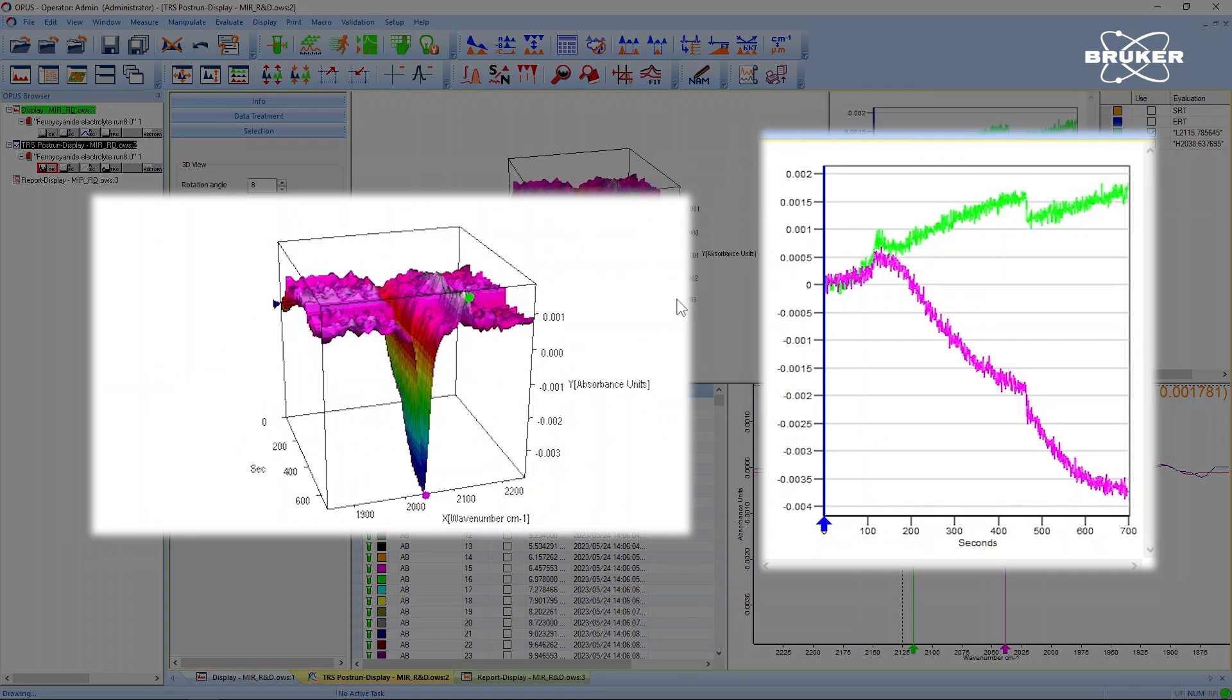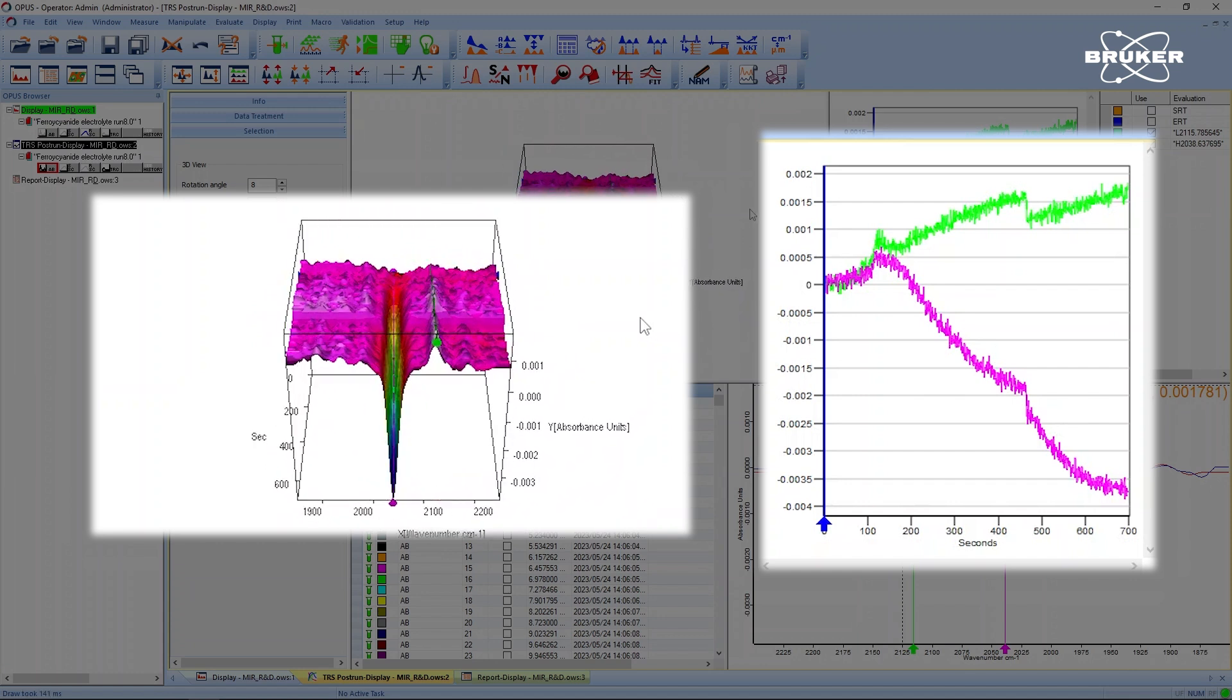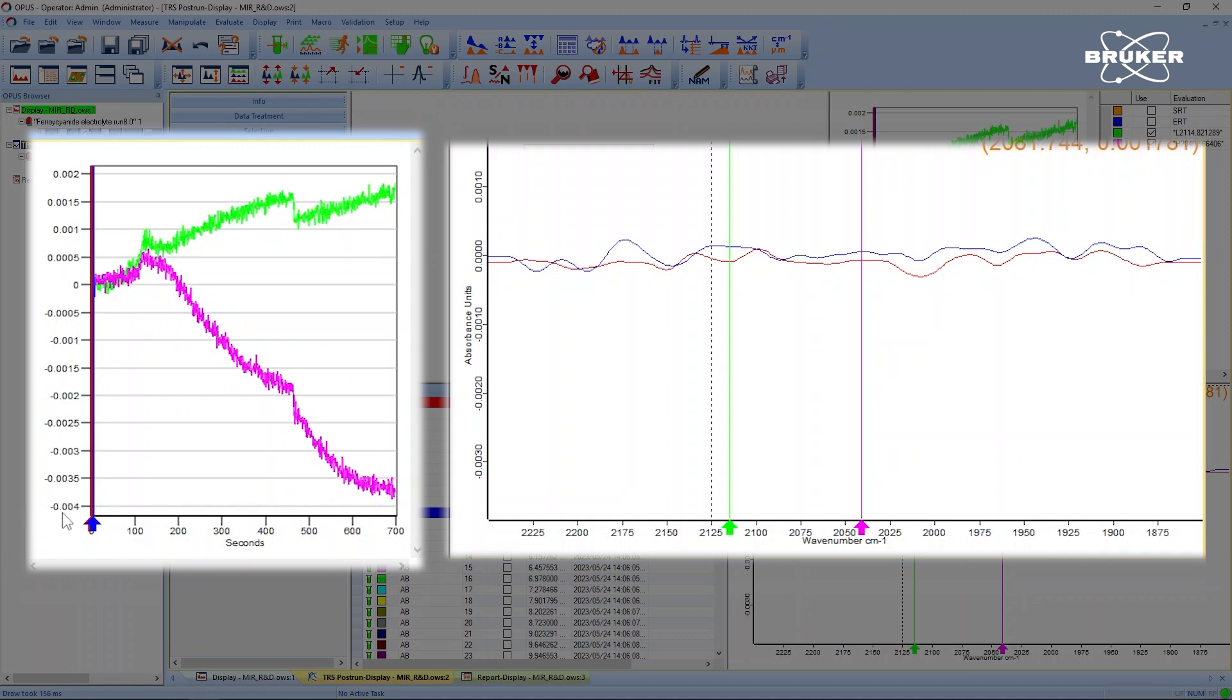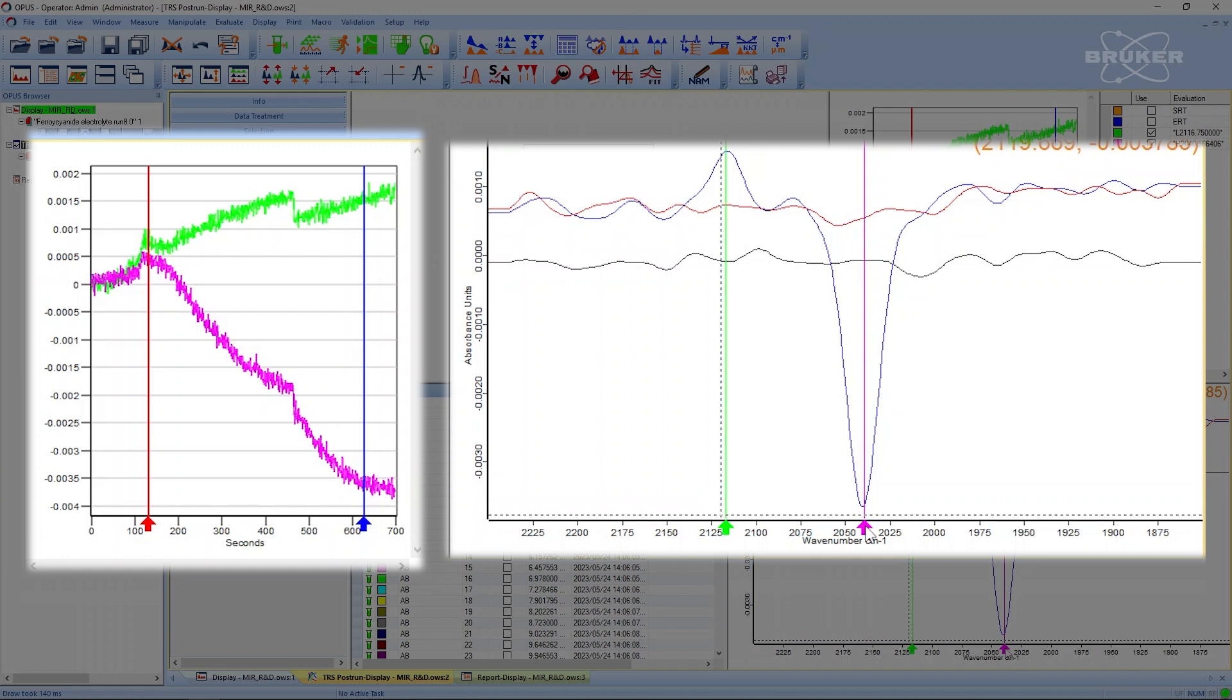The decrease of the ferrocyanide complex occurs at 2040 wavenumbers, while the increase of the newly created ferricyanide complex can be observed at 2115 wavenumbers. You can easily adjust the indicator markers and display the corresponding spectra as desired. You can, of course, adapt the time resolution to the respective reaction kinetics to follow very fast or very slow reactions depending on your need.